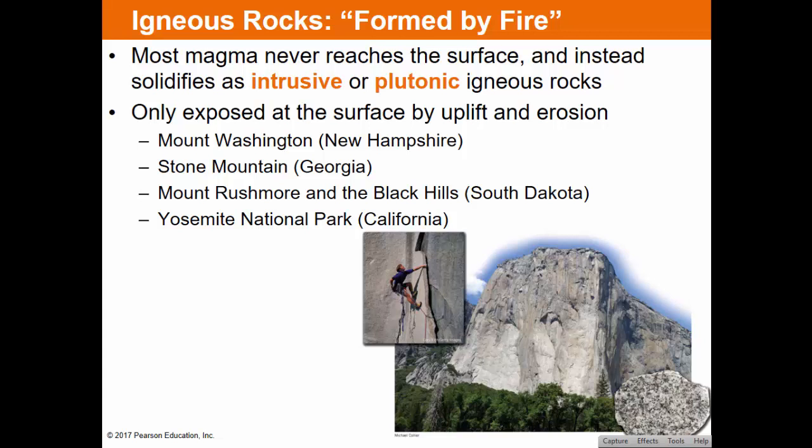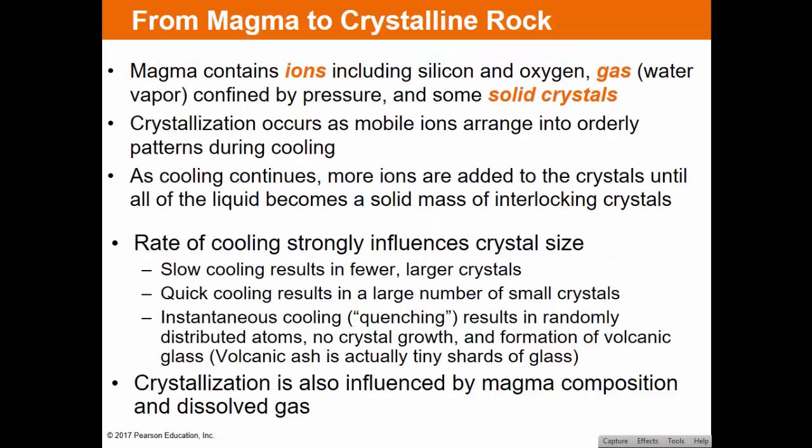Examples of exposed plutonic rock include Stone Mountain, Half Dome in Yosemite, Mount Rushmore, and Mount Washington — all examples of granitic, intrusive plutonic rock that cooled underground and was then exposed at the surface.